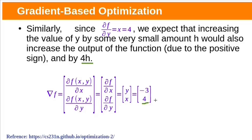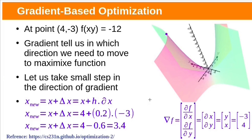Now let us understand how the gradient helps to optimize the function. Take the previous multiplication function f(x, y) = xy. Its graph is a surface in 3D space. Suppose x = 4 and y = −3, so f(x, y) = −12. Our objective here is to maximize f. We know the gradient tells us in which direction to move to maximize the function, so let us use the gradient to maximize f. At this point, ∇f = (∂f/∂x, ∂f/∂y) = (y, x) = (−3, 4).